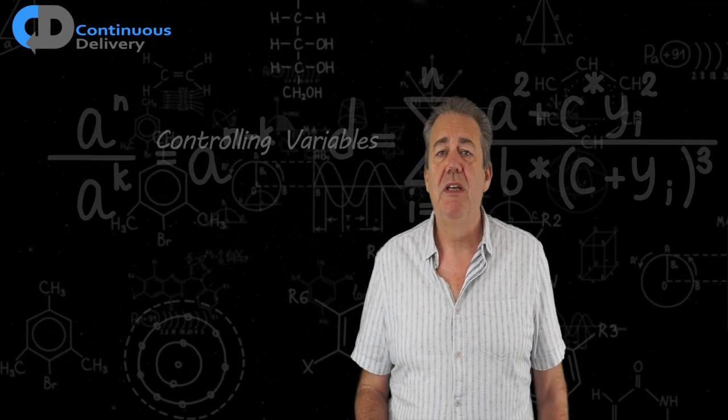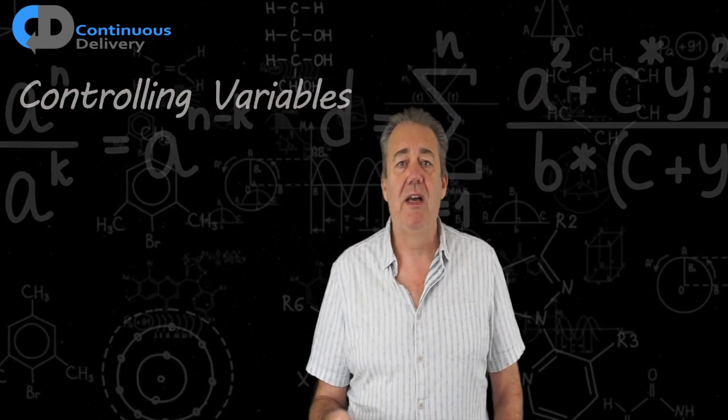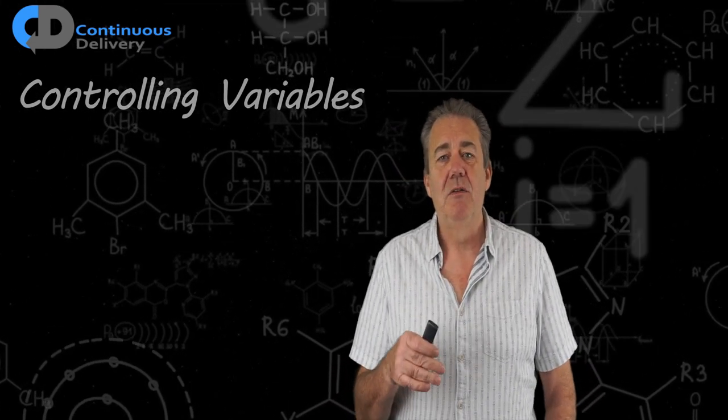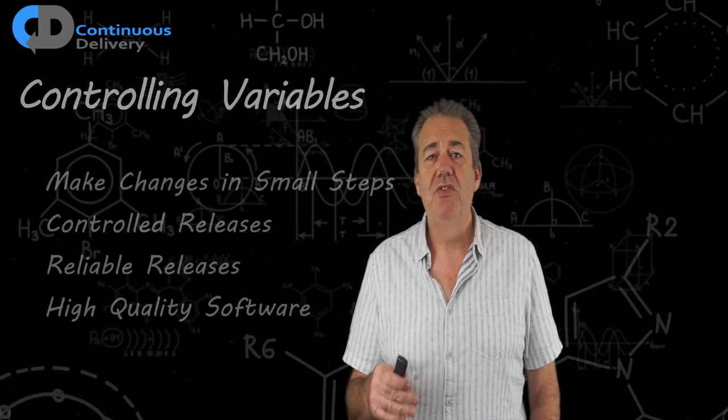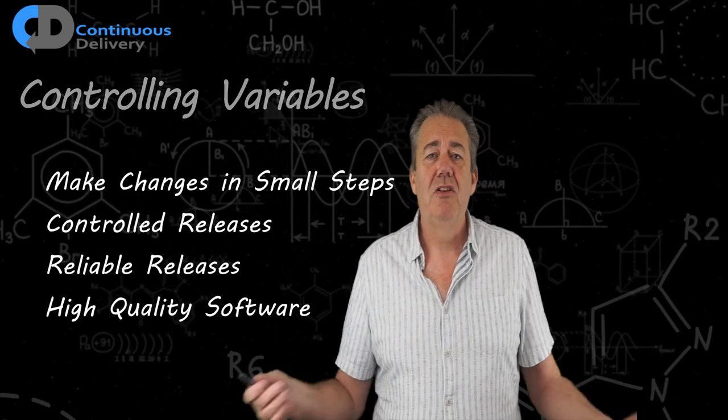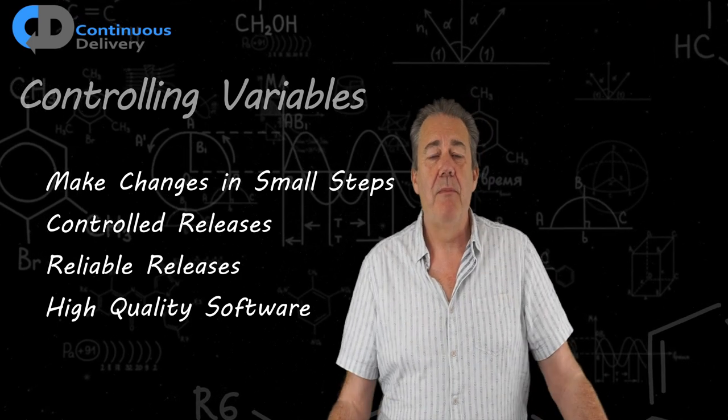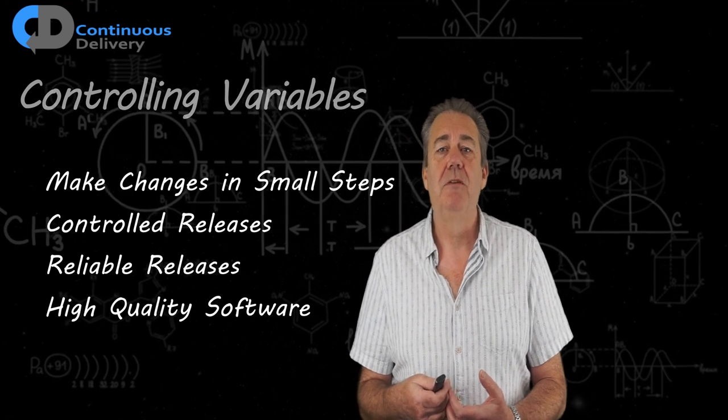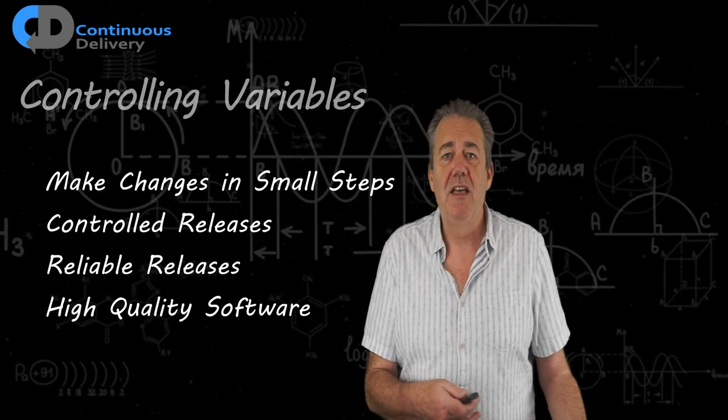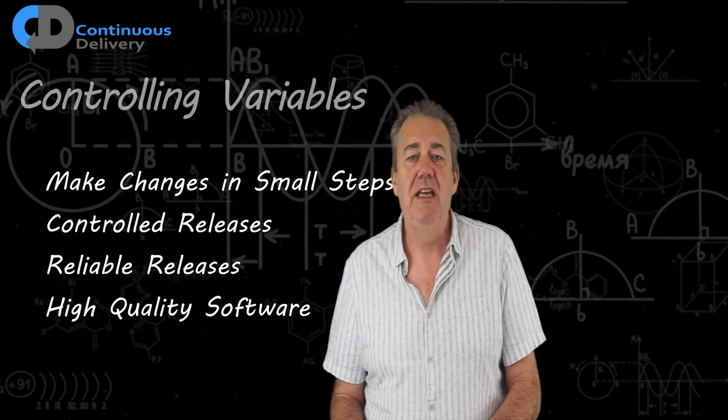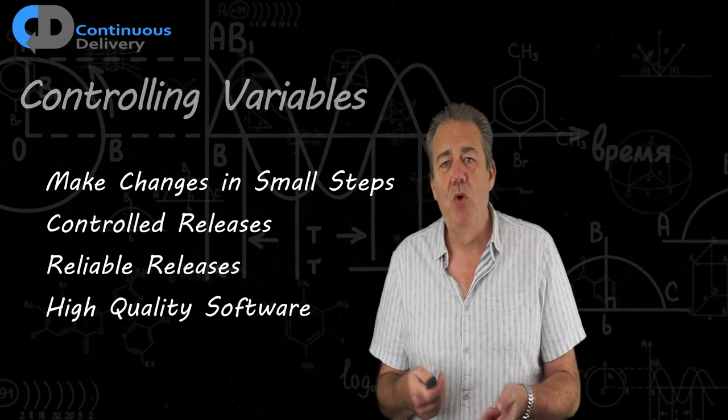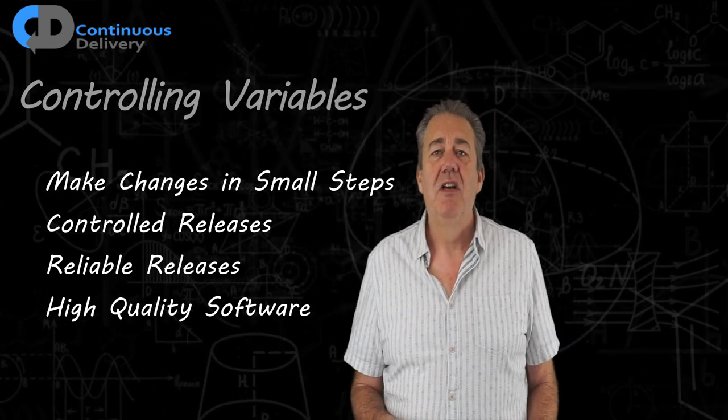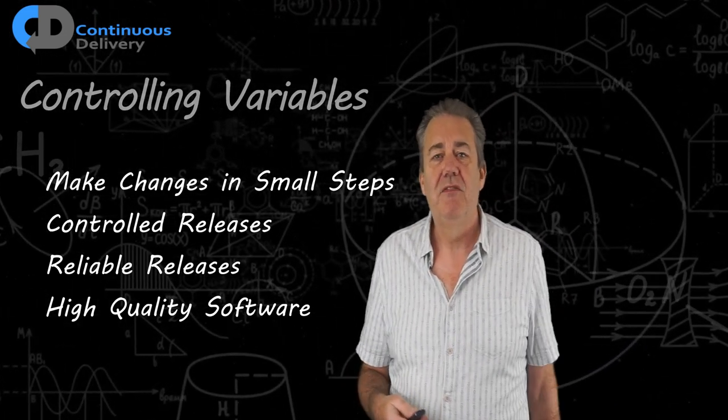And finally, what variables do we need to control when we're thinking in this way for products? One of the things that is vital in our ability to do this is to make changes in small steps. The larger the number of changes involved in any deployment of our product, the more confusing the signals that we are going to get back from production. This can be in terms of quality, but also in terms of the fit of our products with our users' needs. If we can make changes in small steps, small units of change, it's easier for us to understand the impact of that change.